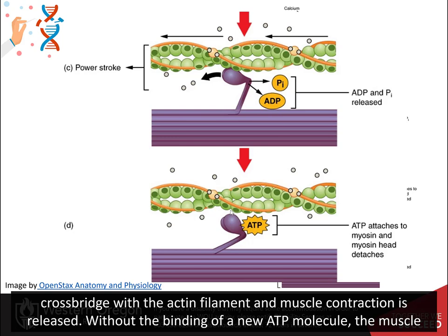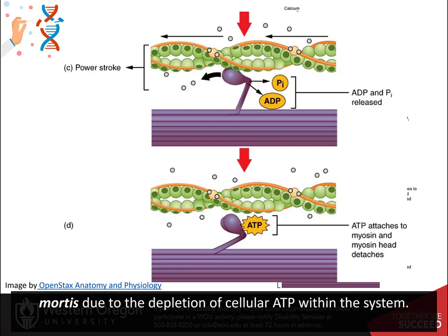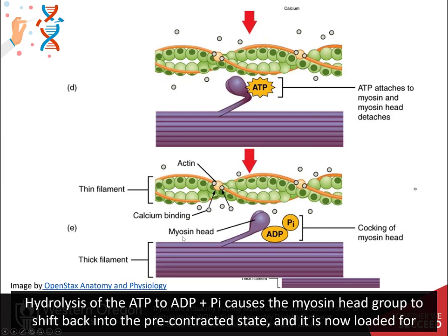Without the binding of a new ATP molecule, the muscle would be stuck in the contracted state. This is seen after death, when the muscles of the body go into a stiffened state called rigor mortis, due to the depletion of cellular ATP within the system.